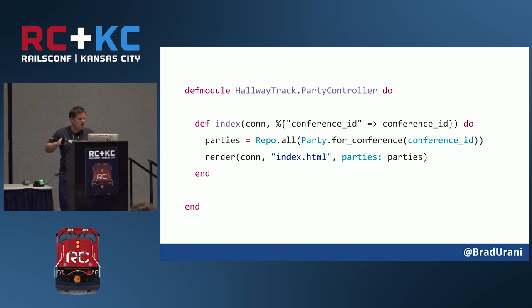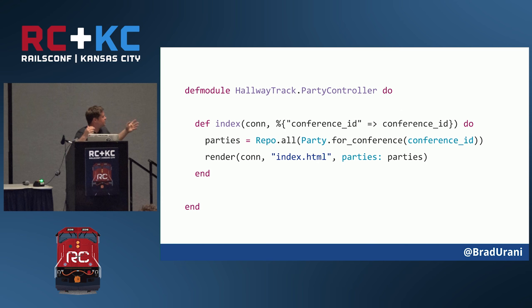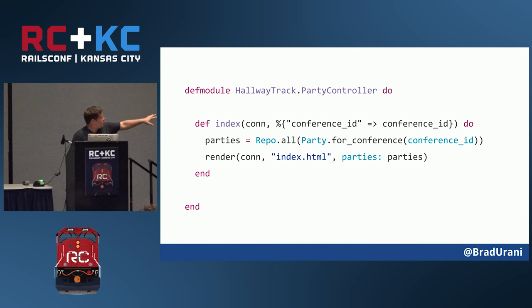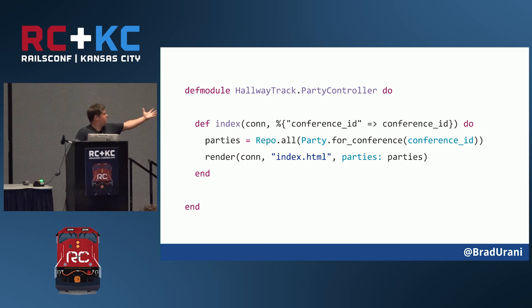Here's the controller. The first line is kind of weird — for the index action, the connection with the request and response is passed in explicitly, it's not global. That funky bracket syntax is pattern matching, kind of like destructuring — getting the conference ID out of the request hash. Then we have repo.all, where repo is the module representing our database, and we pass party.for_conference which returns the query. So it's two pieces: a repo representing the database, and for_conference returning the query.